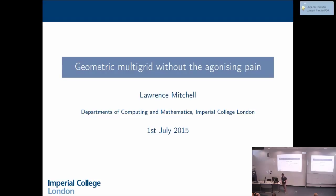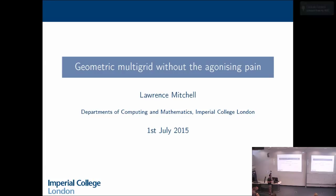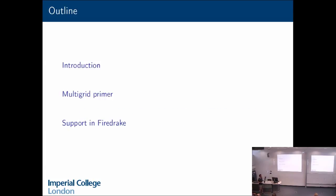Okay, thanks very much. So, when I wrote this talk, and in particular the title, I wasn't expecting it to be quite so hot, so maybe 'Geometric Multigrid Without More Agonizing Pain' would be a better title, but here we go. I've got quite a long time, so I thought I would try and give a very brief introduction and then a multigrid primer, because I don't know how many people in the room know multigrid well. I know lots of people will. But my experience when I first started looking at this is, initially it all looks very mysterious and you don't really know where to start looking, but it's actually not so bad. And then I'll talk a little bit at the end about support for multigrid in FireDrake.